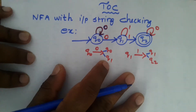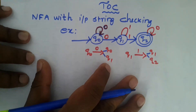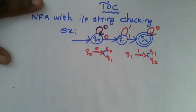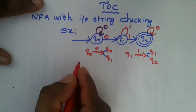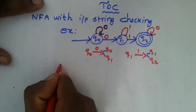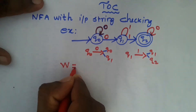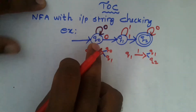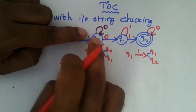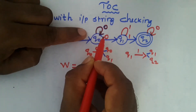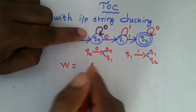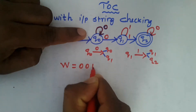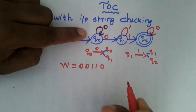After confirming this is an NFA transition diagram, we will now check one input string through this transition diagram. The input string W equals 0, 0, 1, 1, 0, 0, 0, 1, 1, 0. We will see whether this input string is accepted by this finite automata or not.